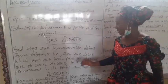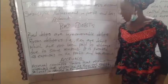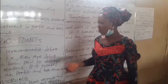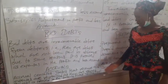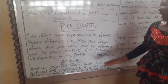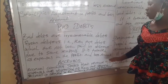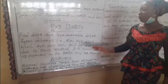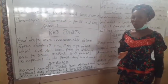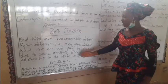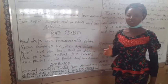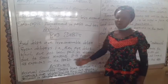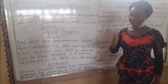Let's move to accruals. Accruals states that revenue and expenses are recognized as they are earned. How do we treat accruals? Accruals is treated in the balance sheet as a liability.